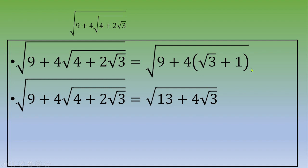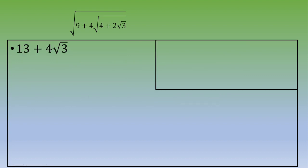Now you apply the same method. The quantity below the root, 13 plus 4 square root of 3, needs to be transformed into a perfect square. We can write 13 plus 4 square root of 3 as 12 plus 1, which is 13, plus 2 times 2 square root of 3 times 1, which gives 4 square root of 3.